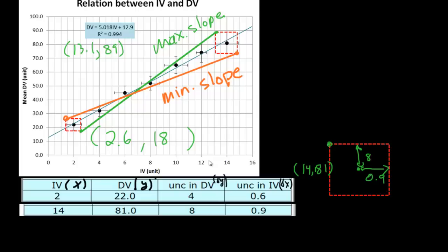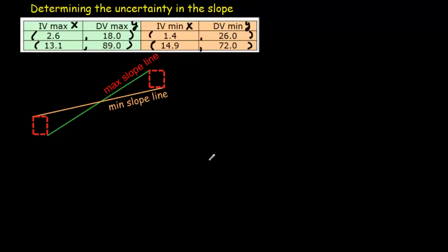And that would give us 2 points on our maximum slope line. That means we can calculate the slope. We can do the same thing for the orange line, the minimum slope line as well. So I've written down the 4 points. Here's the 2 points on the maximum slope line. Here's the 2 points on the minimum slope line. So let's calculate our slopes.